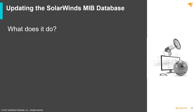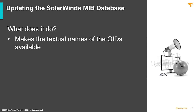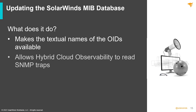Once you download and update the database, the OIDs you need will be available to pull. The textual names and information about the OID and that statistic are all mapped in the MIB file, so the update makes that information available. This also allows hybrid cloud observability to pull and trap SNMP messages from that device.